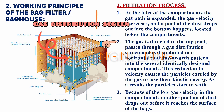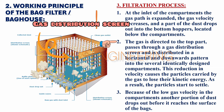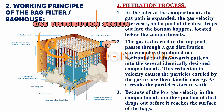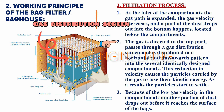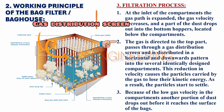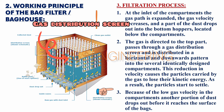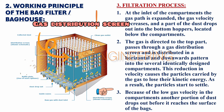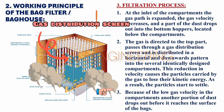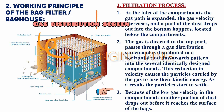The gas is directed to the top part, passes through a gas distribution screen, and is distributed in a horizontal and downward pattern into several identically designed compartments. This reduction in velocity causes the particles carried by the gas to lose their kinetic energy, and the particles start to settle. Because of the low gas velocity in the compartments, another portion of dust drops out before it reaches the surface of the bags. Gas distribution screens, baffle plates, and guide vanes are used to reduce flue gas velocity.